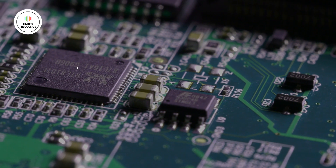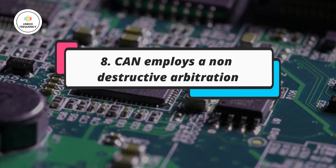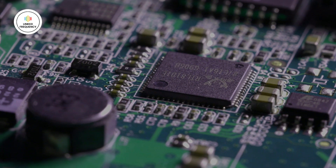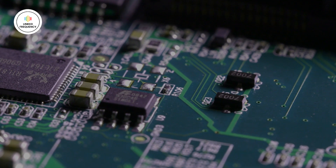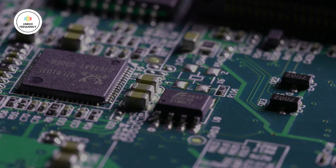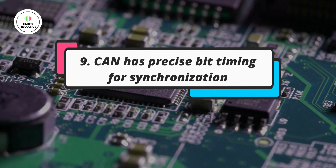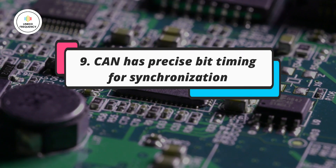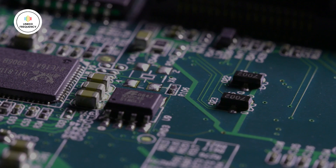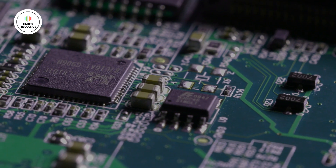The next key feature is arbitration. CAN employs a non-destructive bitwise arbitration mechanism to resolve conflicts when multiple ECUs attempt to transmit messages simultaneously. The arbitration process ensures that the message with the highest priority is transmitted, while lower priority messages are temporarily delayed. The next key feature is bit timing. CAN has precise timing requirements to ensure accurate data transmission, defining parameters such as bit rate, sample points, and synchronization. Proper bit timing is crucial for reliable communication.